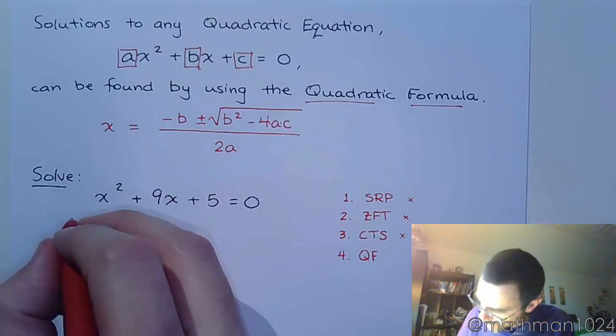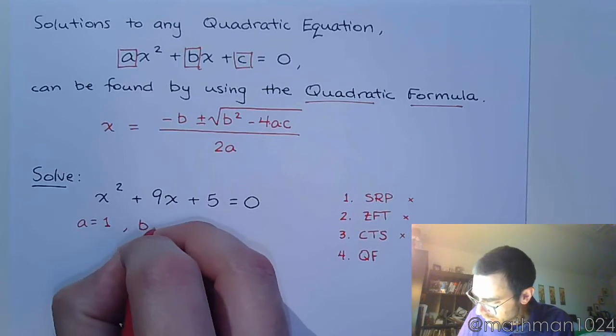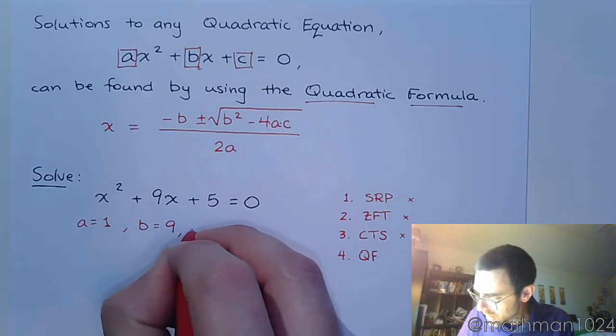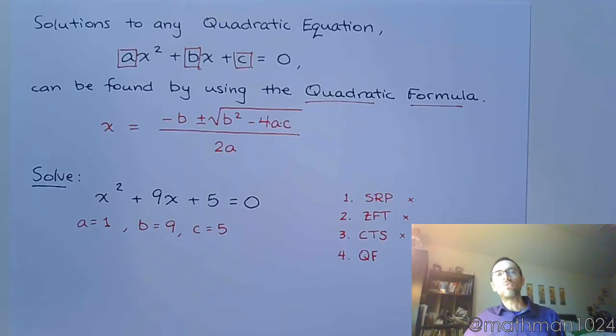So here, we can identify that a, that lead coefficient is 1, b is 9, and c is 5. It's just the coefficients. It's just those values. You're not going to be including the x's in there. It's just the 1, the 9, and the 5. But do pay attention to your signs.